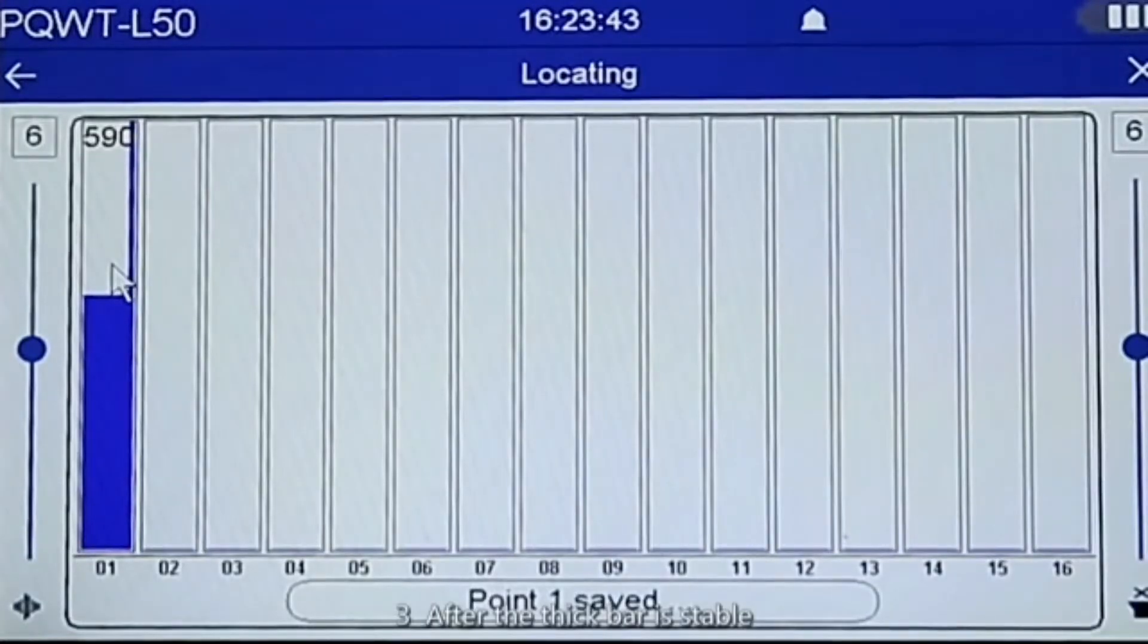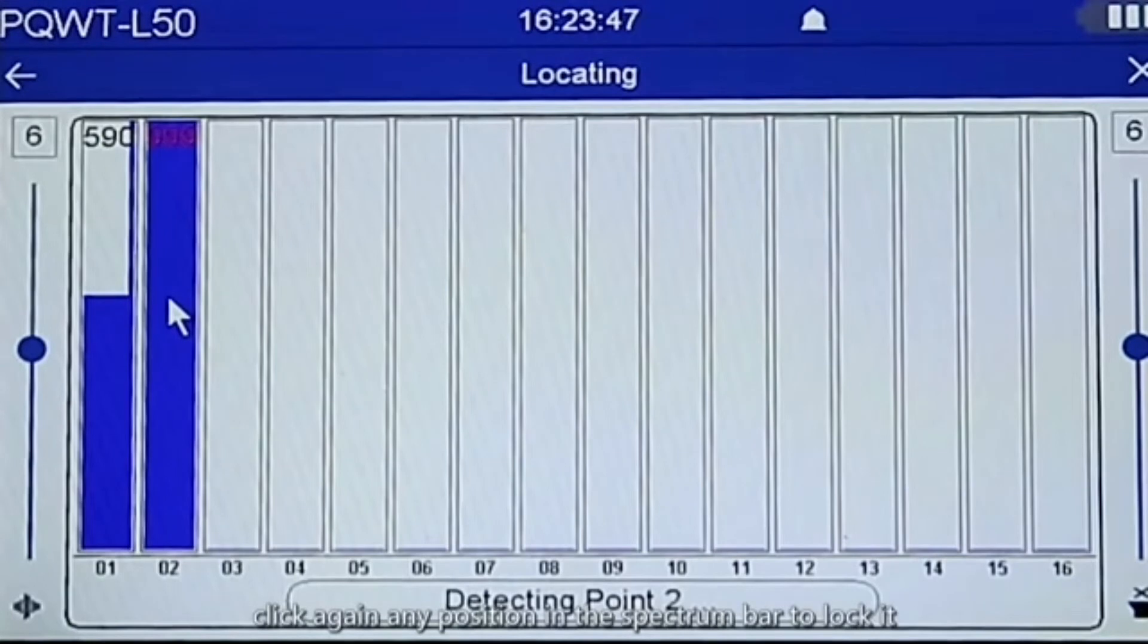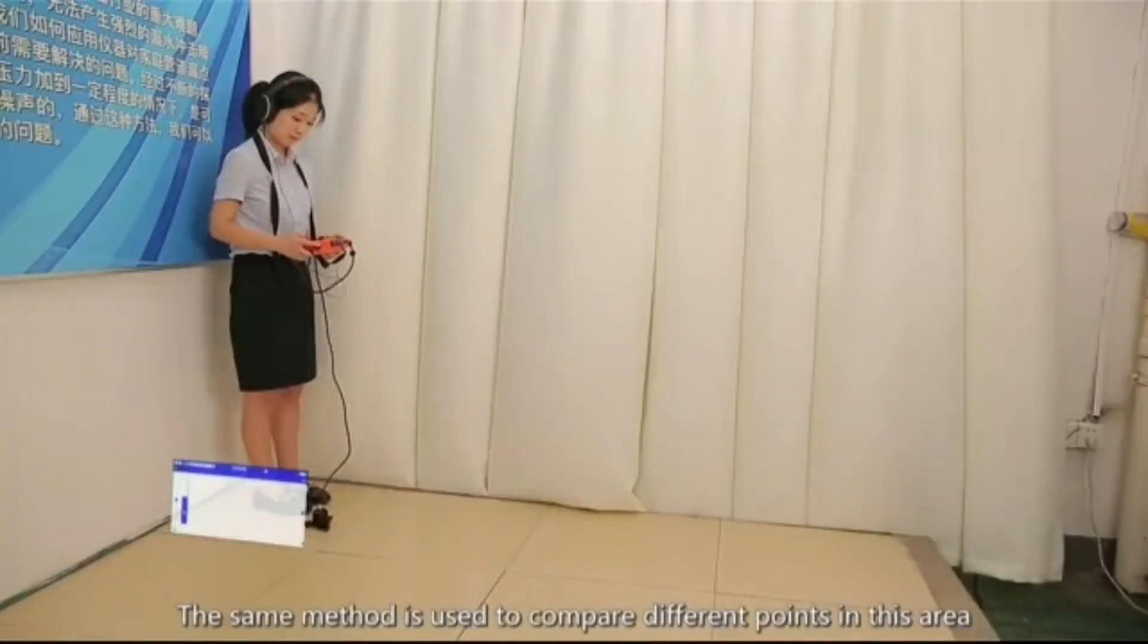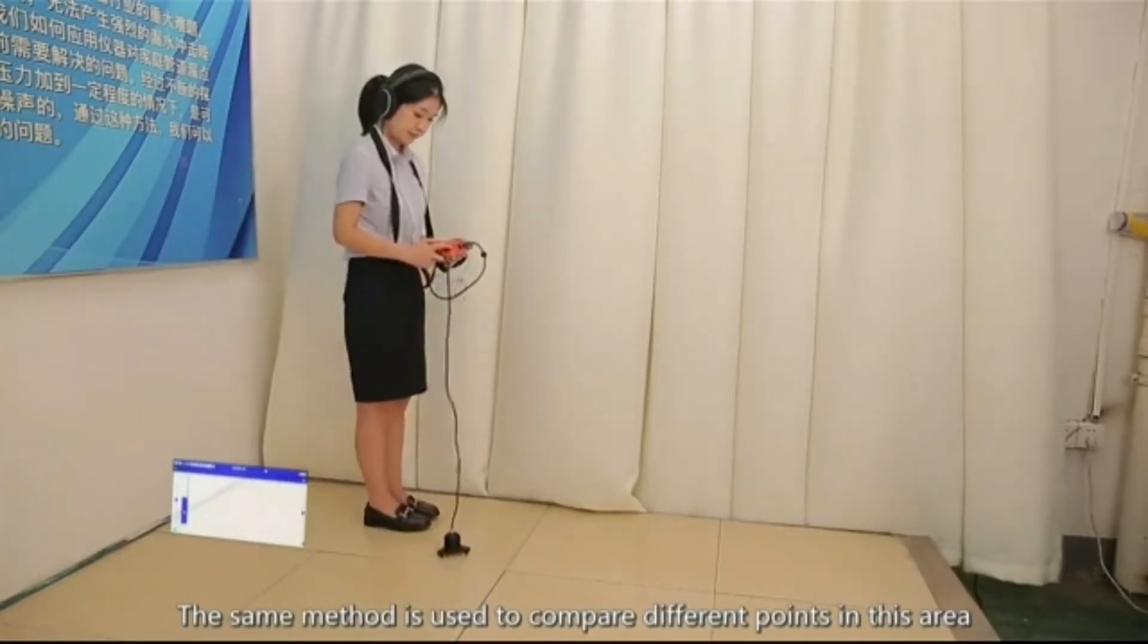After the thick bar is stable, click again any position in the spectrum bar to lock it, and the detection of the first point is completed. The same method is used to compare different points in this area.